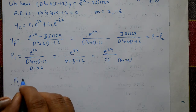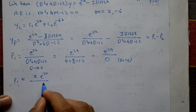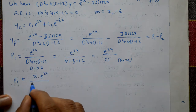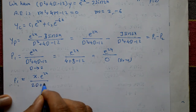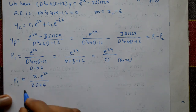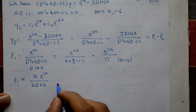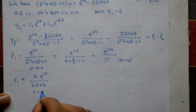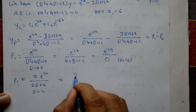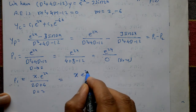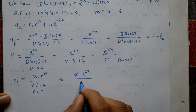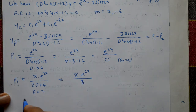Since the denominator is zero, we apply the rule: P1 = e^(2x) / f'(D), differentiating the denominator. f'(D) = 2D + 4. Again Type 1 with D = 2: denominator = 2(2) + 4 = 8. So P1 = x·e^(2x) / 8.